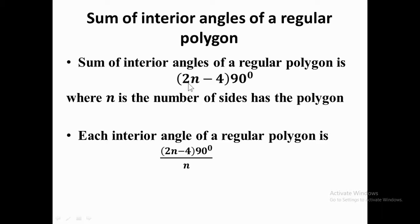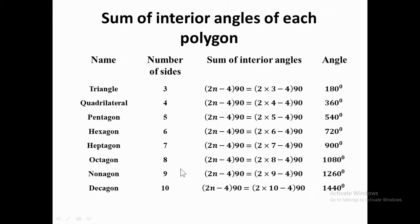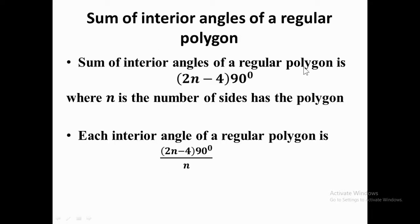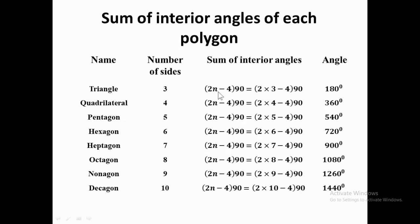You can see on the screen we have the name of the polygon, the number of sides, and the sum of interior angles. For a triangle: (2×3 − 4) × 90 = 180°. For a quadrilateral with n = 4: 2×4 = 8, minus 4 = 4, times 90 = 360 degrees. So the sum of interior angles in a quadrilateral is 360 degrees.